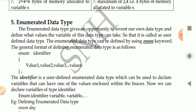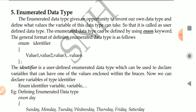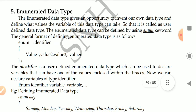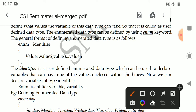Enumerated data type gives the opportunity to define our own data type, and also define what values the variable of this data type can take. That is why it is also called a user-defined data type. Next, how to define an enumerated data type — by using a keyword called enum, spelled E-N-U-M. By using the enum keyword we can define user-defined data types.